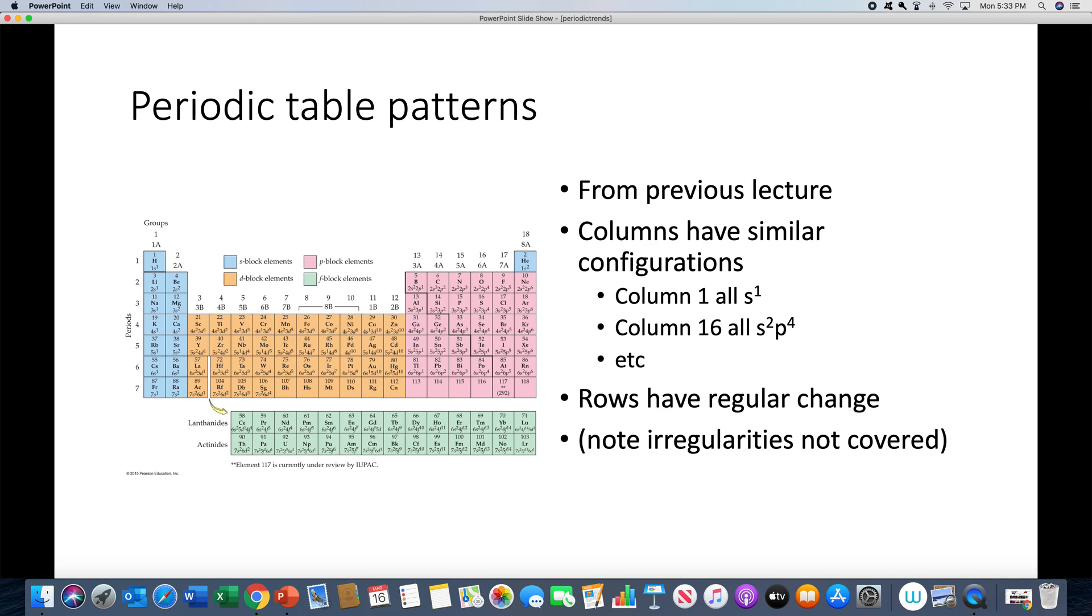Down the first column, everything ends in S1. Down column two, everything has an S2 configuration. Down column 16, as it says on the slide, everything in that column - oxygen, sulfur, selenium - all end in an S2P4 and so on. So everything in the same column has similar configurations.